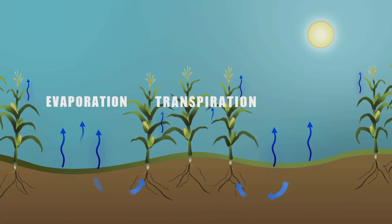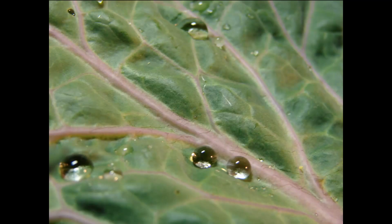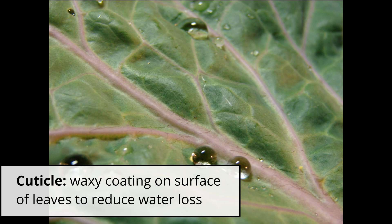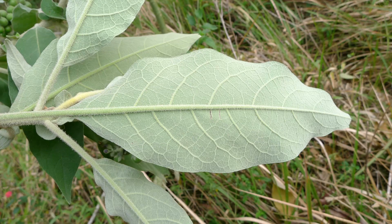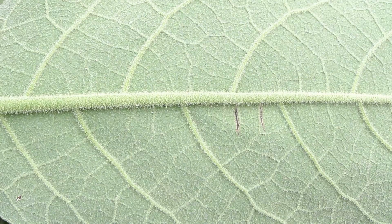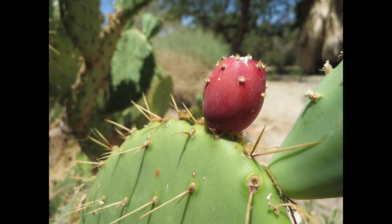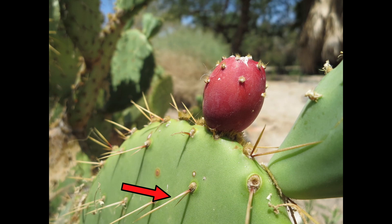Water loss is higher when it's hot or windy, and plants have developed ways to reduce it. Leaves have a waxy layer on top called the cuticle, which acts as a physical barrier to reduce water loss. Stomata are often located on the underside of the leaf, where they're more protected from direct sun and wind. Some leaves are hairy, which slows air movement around the stomata. In extreme environments like deserts, leaves may be highly reduced — a cactus pad is actually a stem that photosynthesize, while the actual leaf has been converted into a spine.